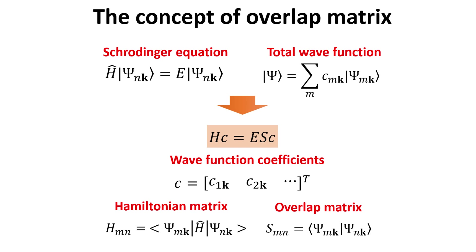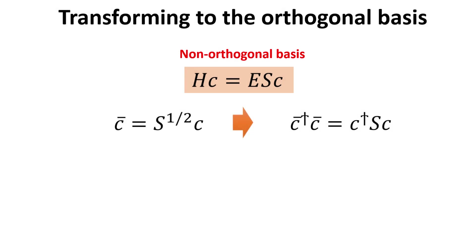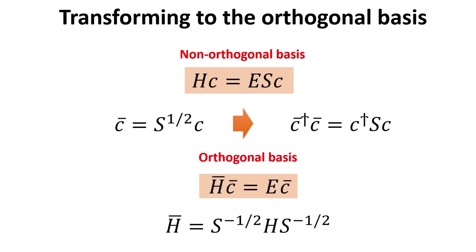Our previous discussion on how to construct an orthogonal basis from the linear combination of atomic orbitals can also be visualized in terms of the overlap matrix. To construct an orthogonal basis, we define a new column vector C bar, which is the square root of the overlap matrix times the original column vector for the coefficients of the total wave function. Written in this way, the new set of coefficients C bar are obtained as linear combinations of the old set of coefficients C, with the multiplying factors being the elements of the square root of the overlap matrix. This particular definition for C bar implies the normalization conditions for the original wave function coefficients. We can then rewrite the matrix Schrödinger equation in terms of the C bar column vector, obtaining the matrix form of the Schrödinger equation for orthogonal wave functions, where the orthogonality is made clear by the absence of an overlap matrix on the right-hand side. The Hamiltonian matrix is also transformed by the inverse of the square roots of the overlap matrix.